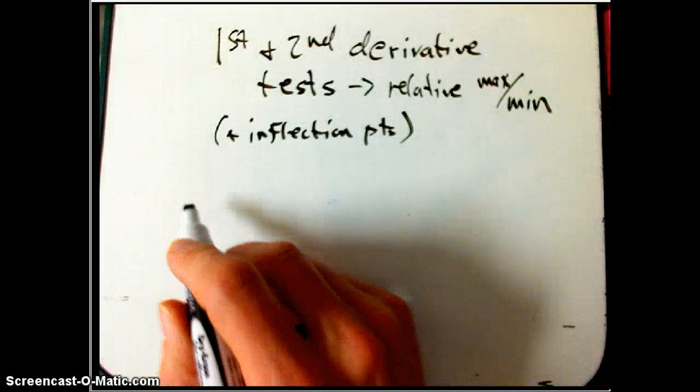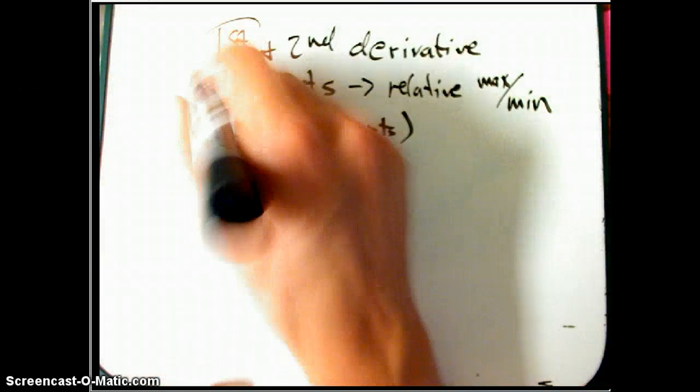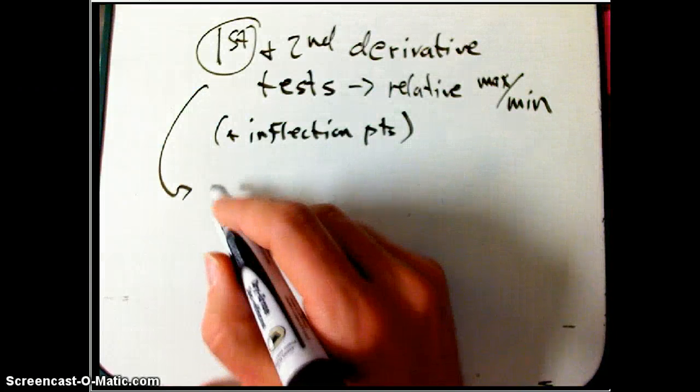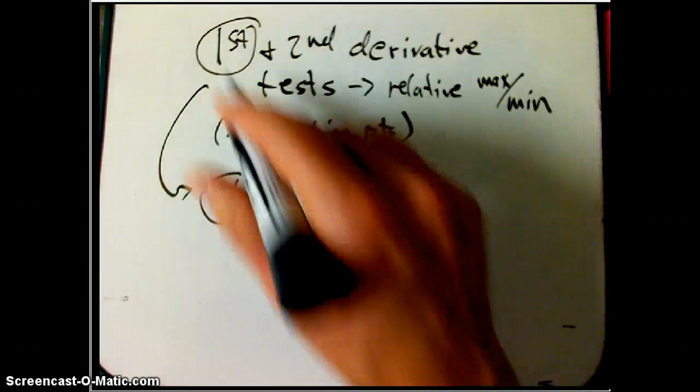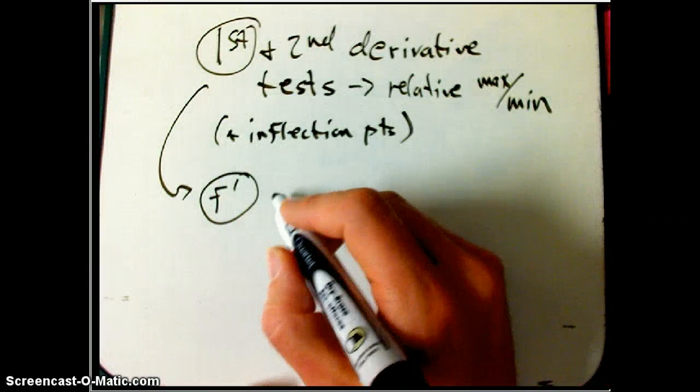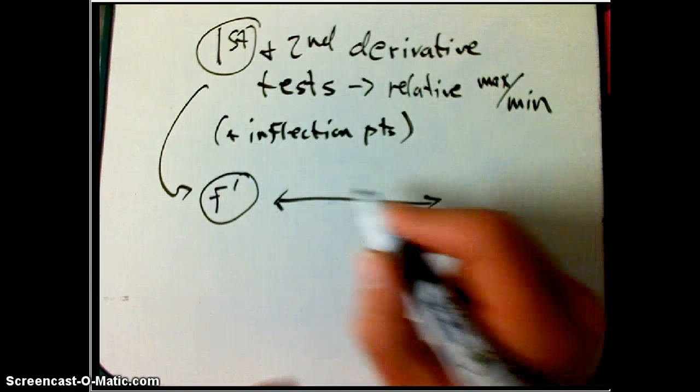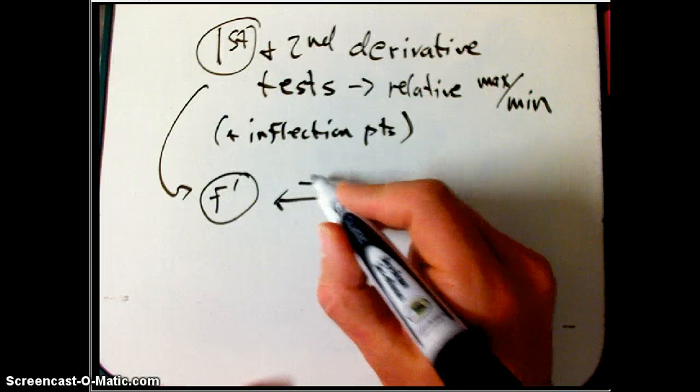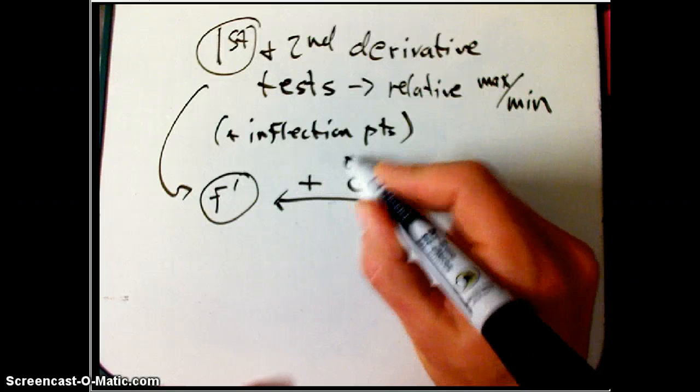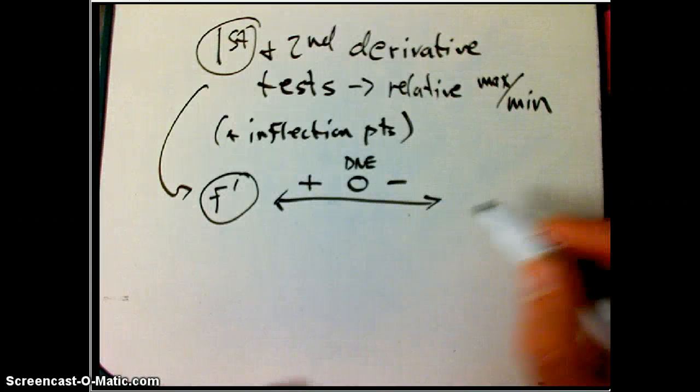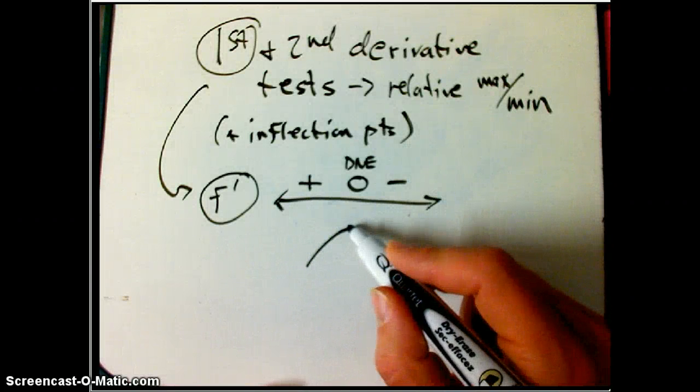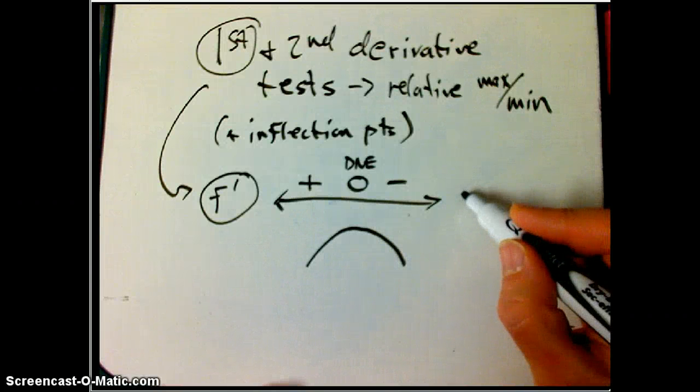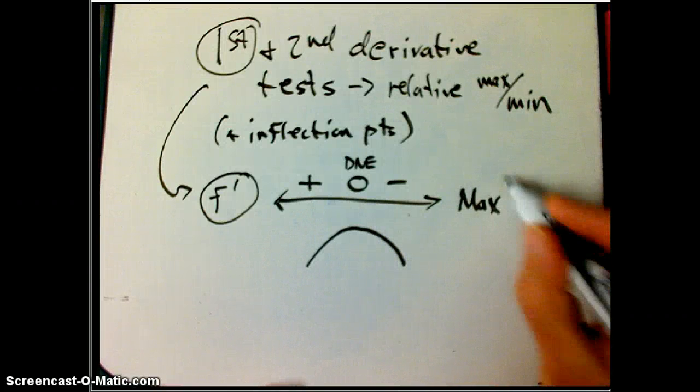So what do we got? The first derivative test - we're looking at a sign chart for f prime, the first derivative. If you see a sign change plus to zero or DNE to minus, then the function is going up and then either a nice hump or a corner or cusp and then going down. That's going to be a local or relative max.